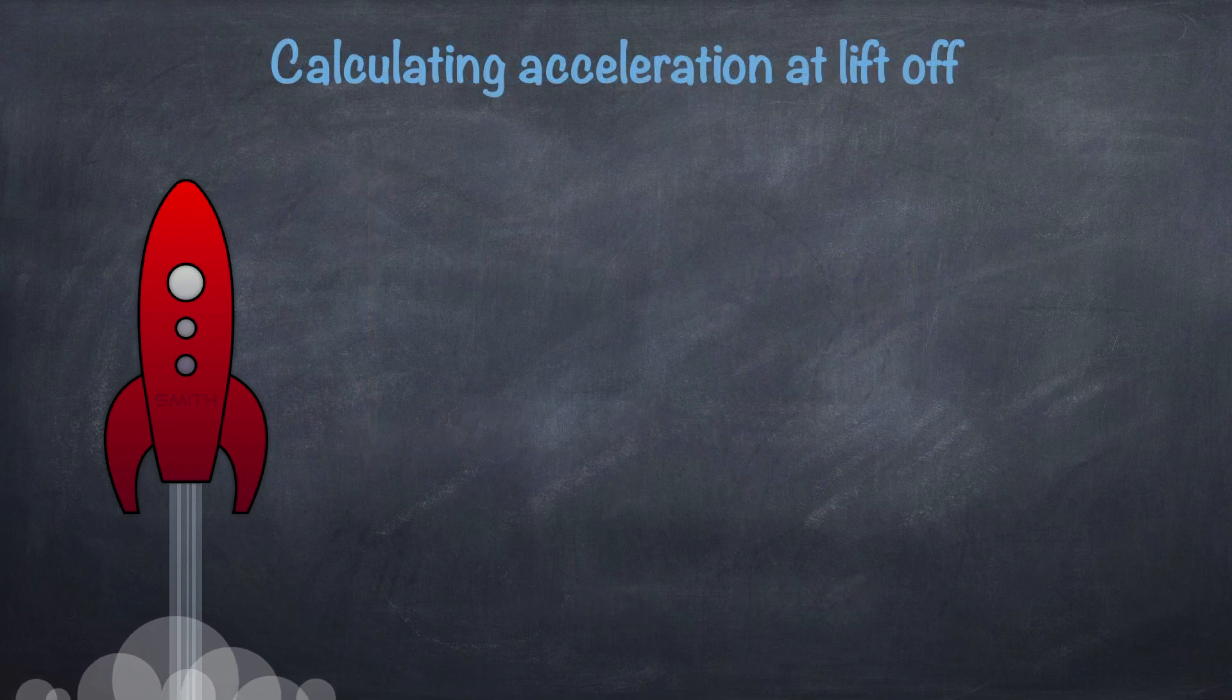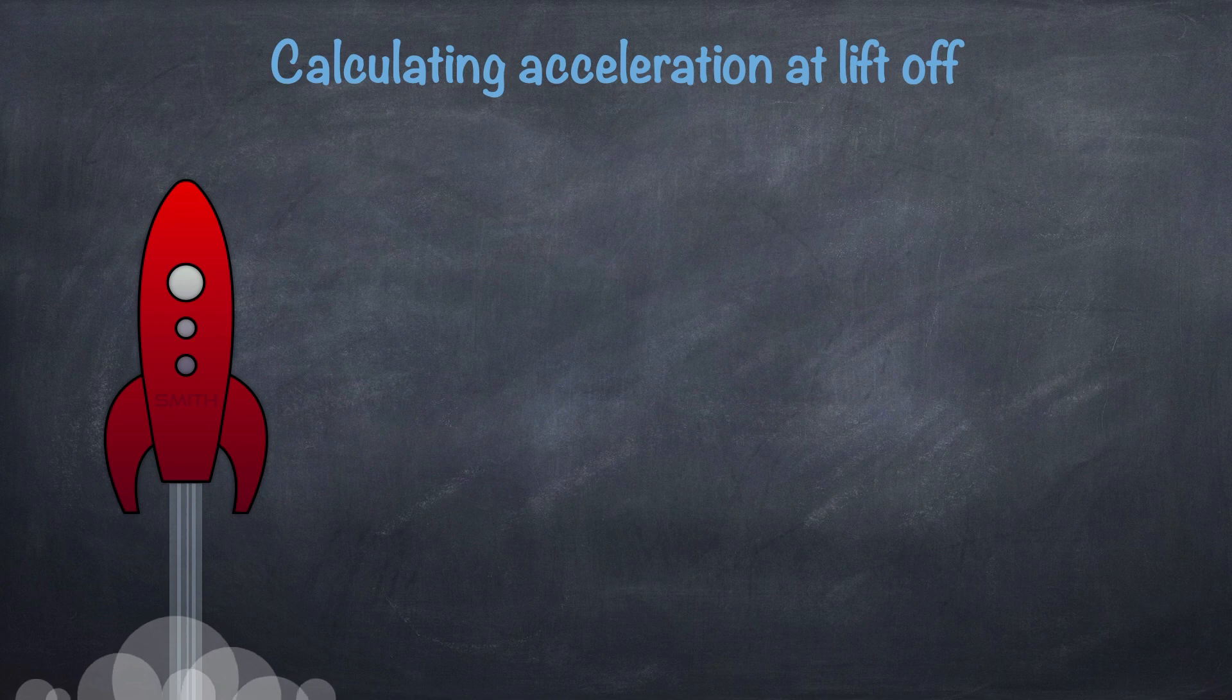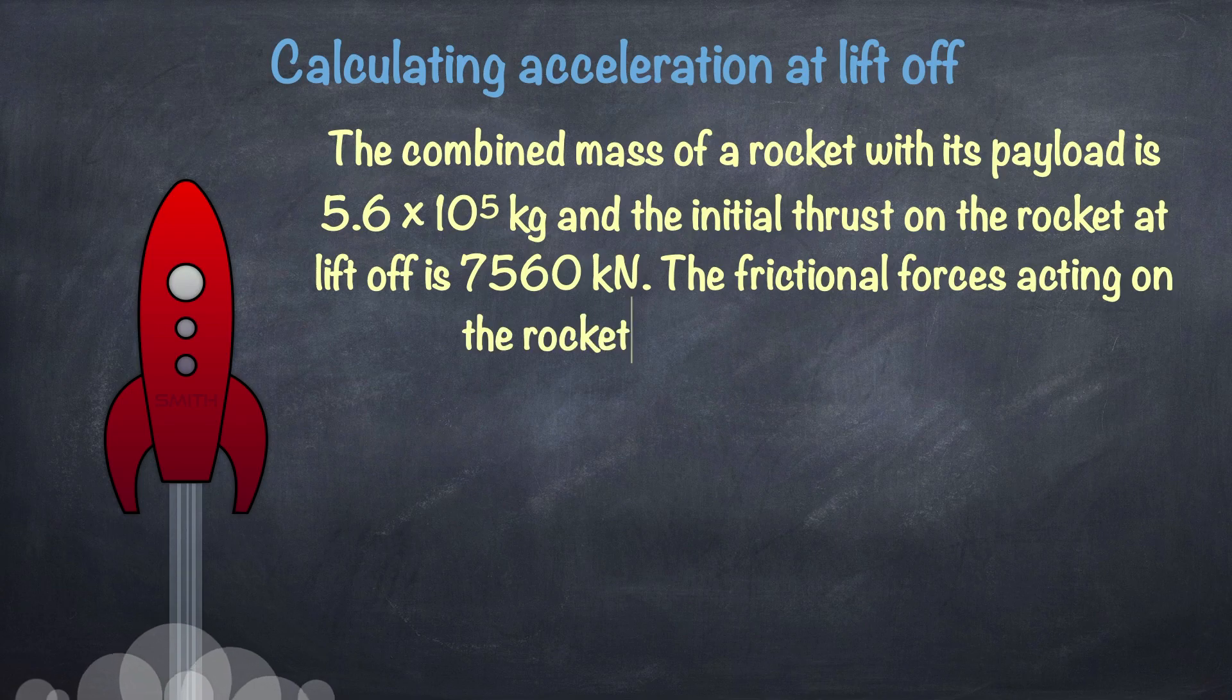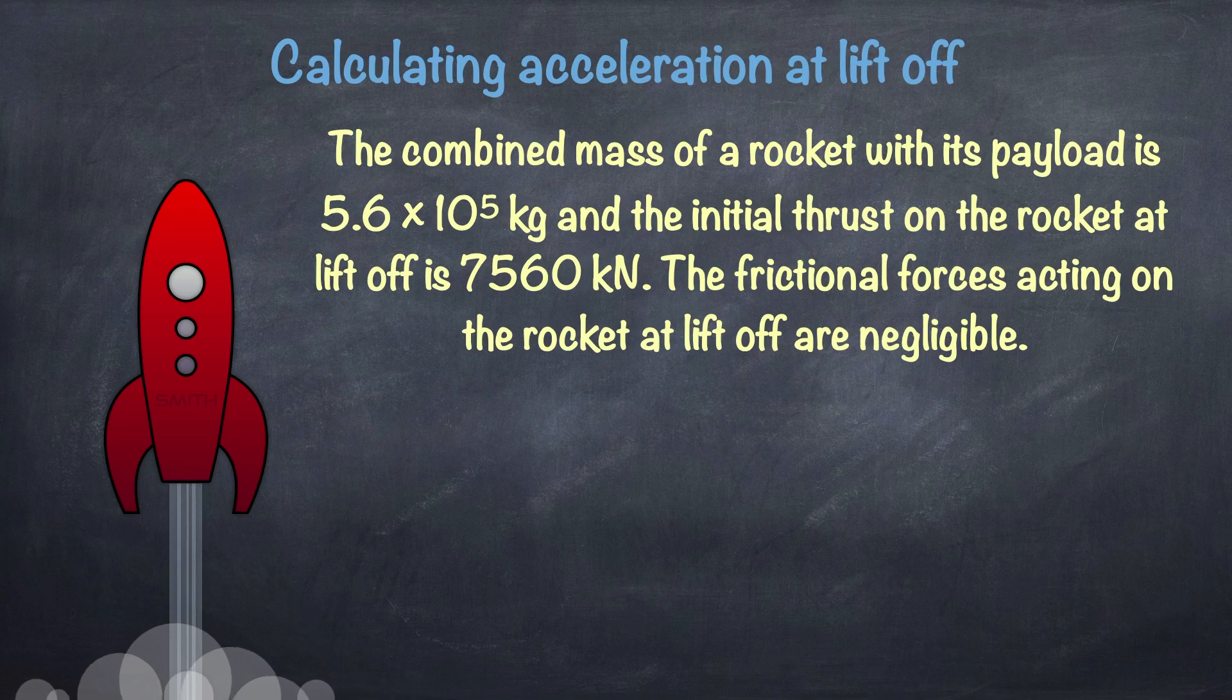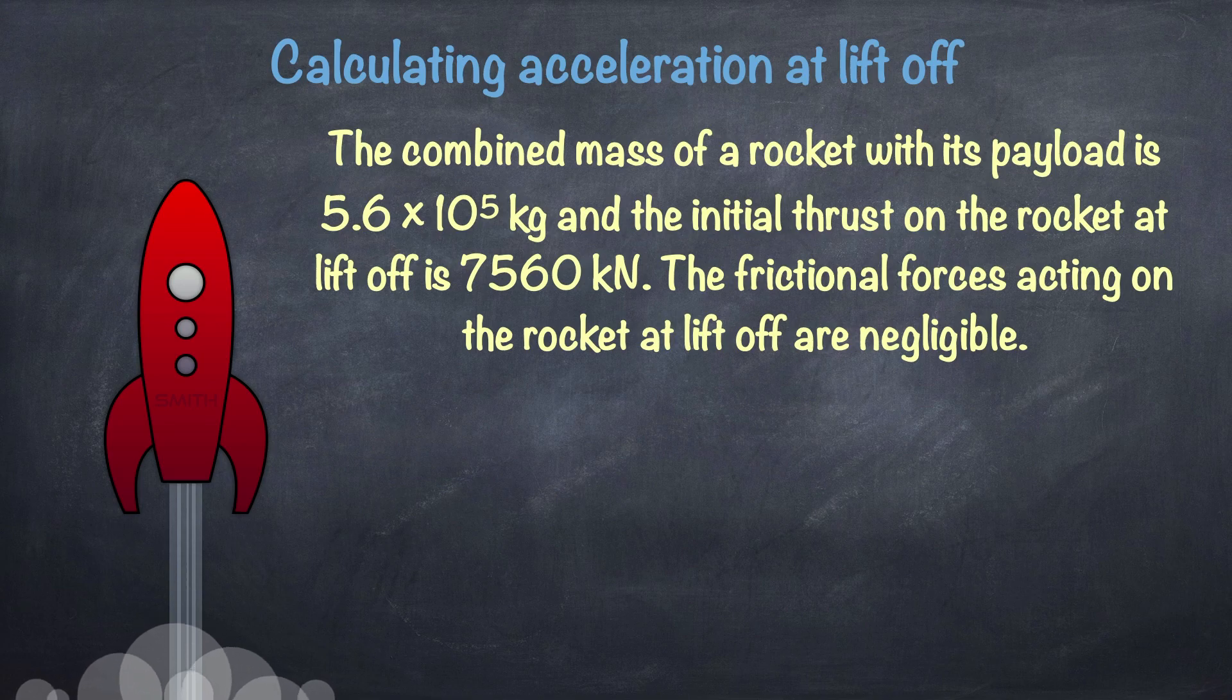Calculating the acceleration of a rocket at liftoff to be exact. Let's take a look at an example question. The combined mass of a rocket with its payload is 5.6 times 10 to the power of 5 kilograms, and the initial thrust on the rocket at liftoff is 7,560 kilonewtons. The frictional forces acting on the rocket at liftoff are negligible.